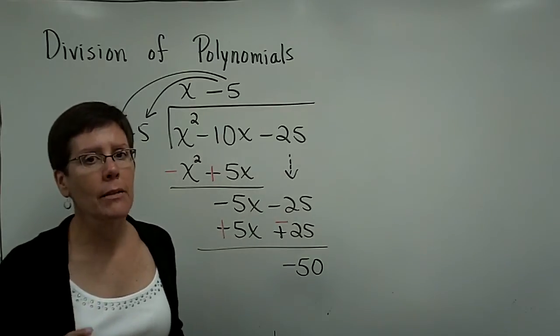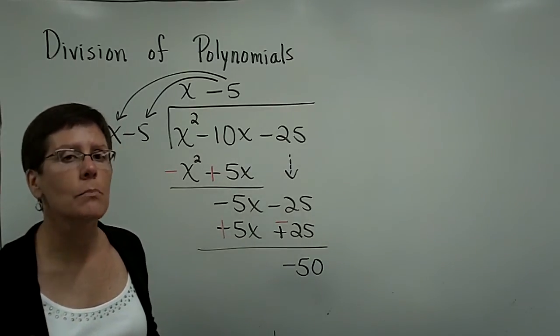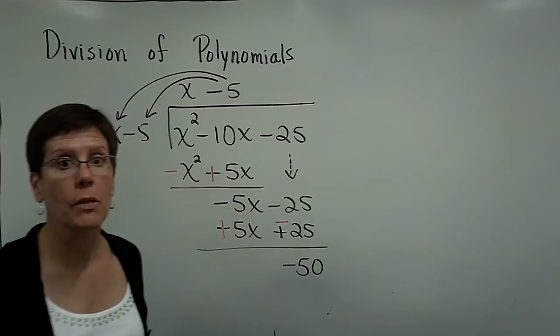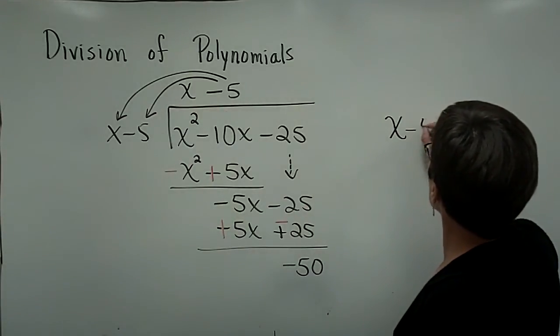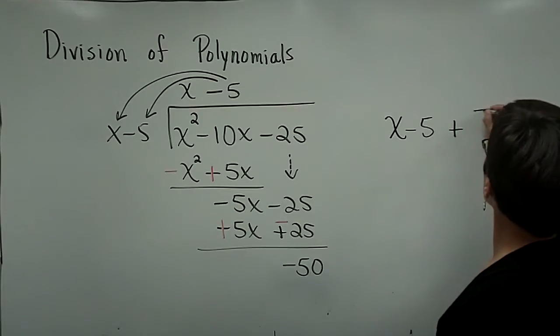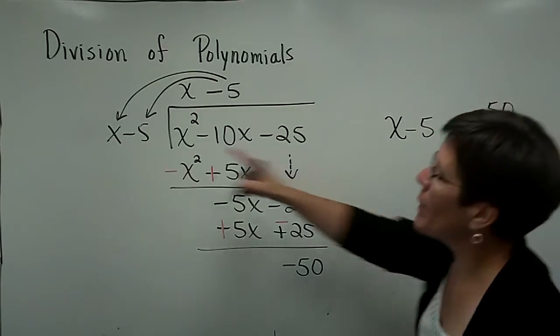When I have a remainder in these problems, I have to write this much like I did the arithmetic problem that was up in the previous one. I have my answer of x minus 5 plus I have a remainder of a negative 50 over my divisor of x minus 5.